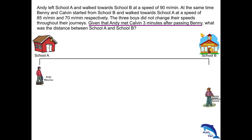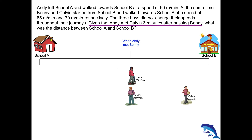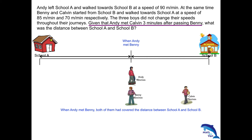Andy would meet Benny first because Benny was faster than Calvin. At the point in time when Andy met Benny, this is the distance covered by Andy and this is the distance covered by Benny. When you add up these two distances, it's basically the distance between the two schools. Calvin was behind Benny, and this is the difference in distance between Benny and Calvin when Andy met Benny.